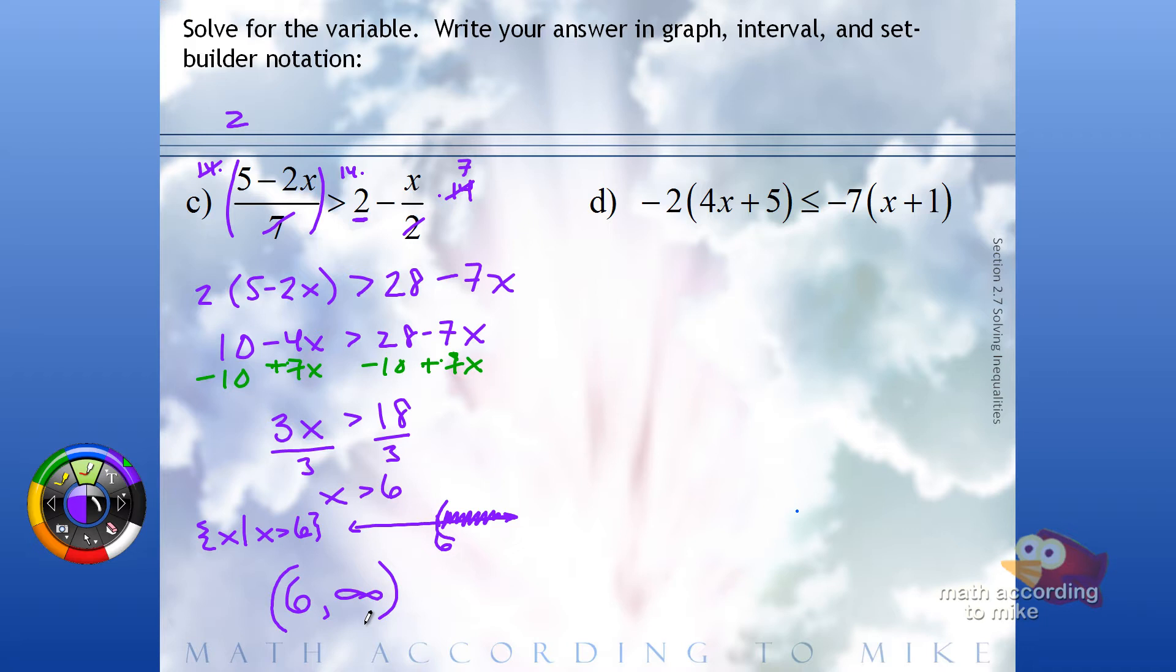One more of this type to go. Oh, we're going orange. All right. We're going to distribute the negative 2 and the negative 7 through first. We'll get negative 8x minus 10 is less than or equal to negative 7x minus 7.